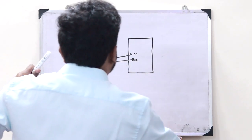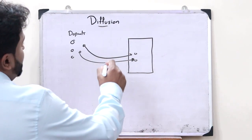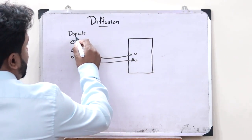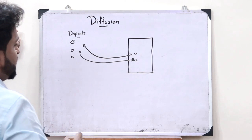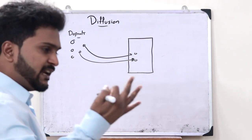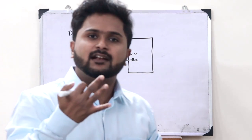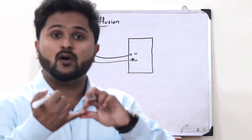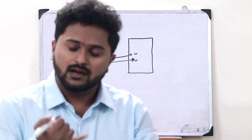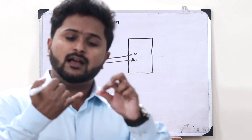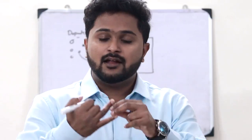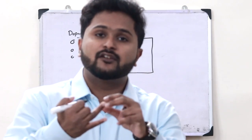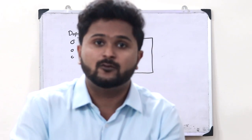There are different types of diffusion. Based on the type of dopant present, there are three types of diffusion that can happen: diffusion from a solid dopant, diffusion from a liquid dopant, and finally, diffusion from a gaseous dopant.